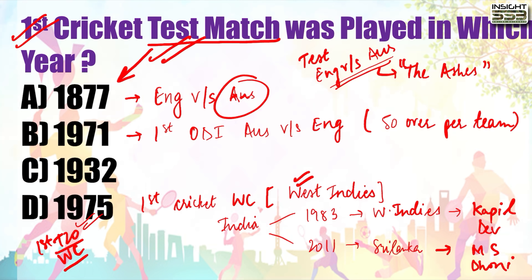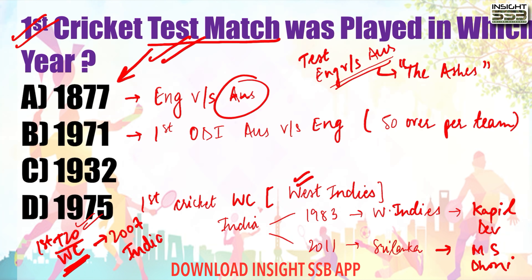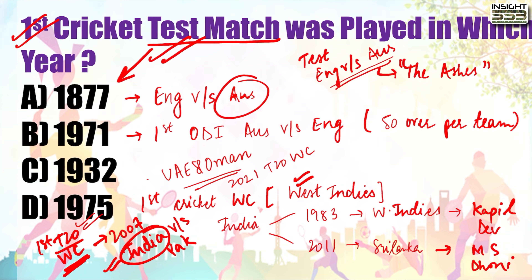The first T20 World Cup was played in 2007. In women's cricket the first T20 match was in 2004 and men's in 2005, but the T20 World Cup is what's important - first played in 2007. The final was between India and Pakistan, and India won, making it even more special for us. The next edition is scheduled for 2021 in UAE and Oman.